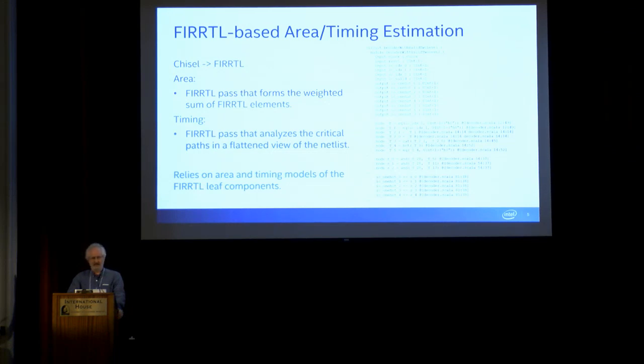There's an example of some FIRRTL on the right-hand side here. In order to estimate area, all we're doing is walking over the leafs of that FIRRTL code, looking at each leaf instance, figuring out what area we should assign to it, and summing all those things up.